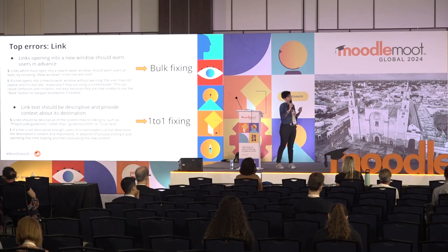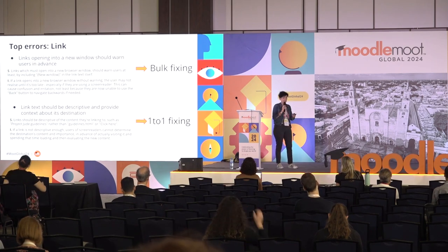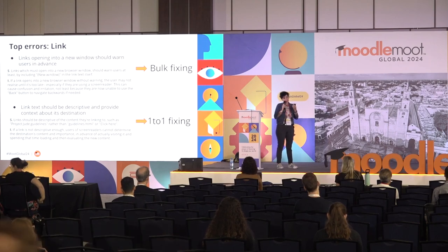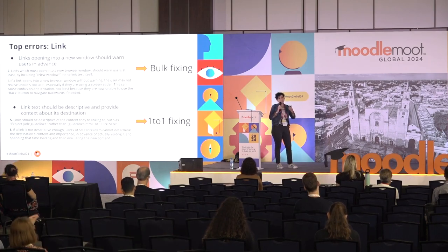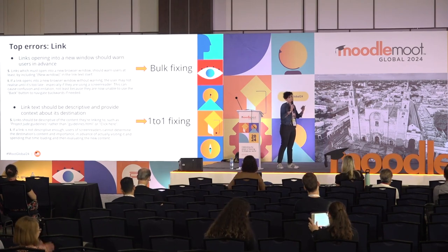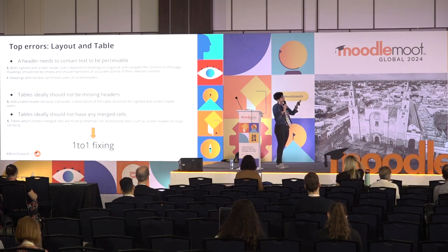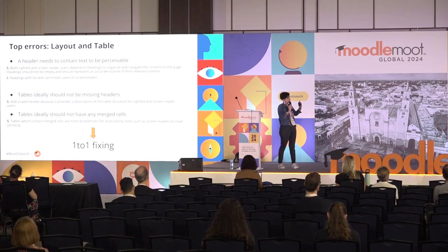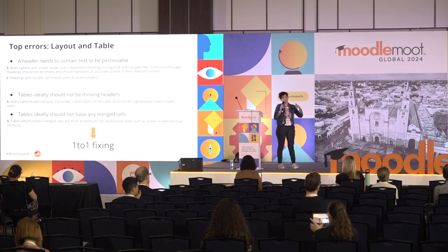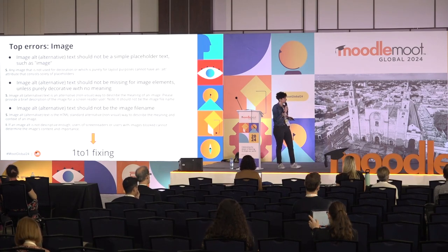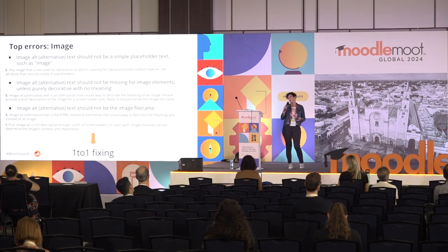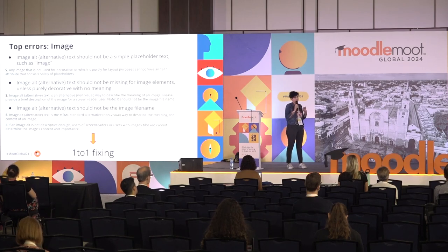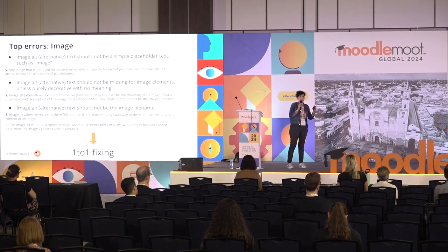About links, we learned that it is better to open links in a new window, and obviously every link needs descriptive text. For layout and tables, the problem is the header, which in most cases is missing. Also, the use of merged cells can cause problems for screen readers. For images, the problem is the alternative text, which in many cases is missing or is a simple placeholder like 'image' or the name of the file.